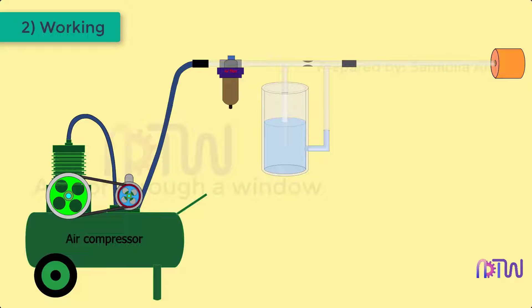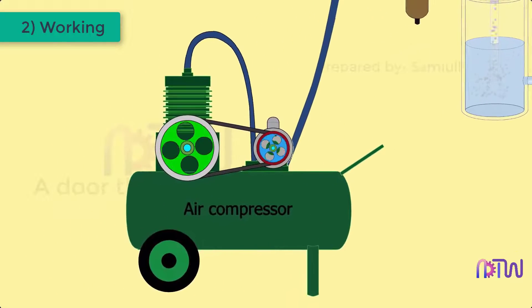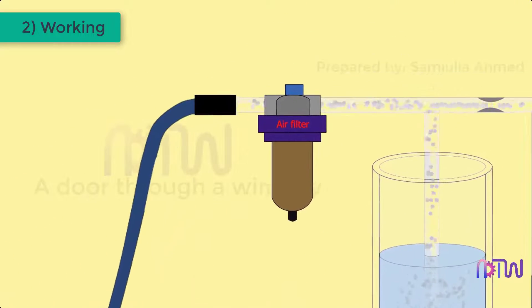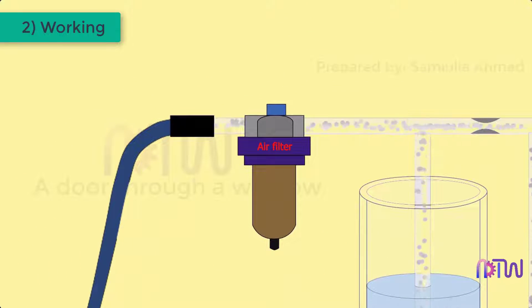Working of pneumatic comparator. In this comparator, compressed air is used as an operating medium. At first, the air is compressed in the air compressor. Then the compressed air from the compressor passes through the air filter. All the dust particles present in the air are separated from the air in the air filter and only pure air passes through the filter.